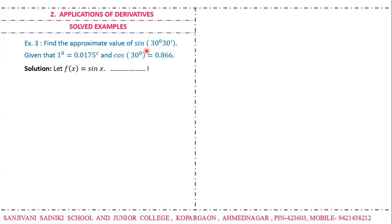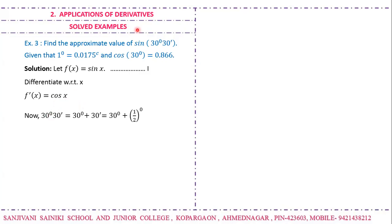Find the approximate value of sin(30°30'), given that 1° = 0.0175 radian and cos 30° = 0.866. We choose f(x) = sin x, whose derivative is cos x. Here 30° = π/6 radian, and 30 minutes is half a degree, which is 0.0175/2 = 0.00875 radian. So we choose a = π/6 and h = 0.00875.